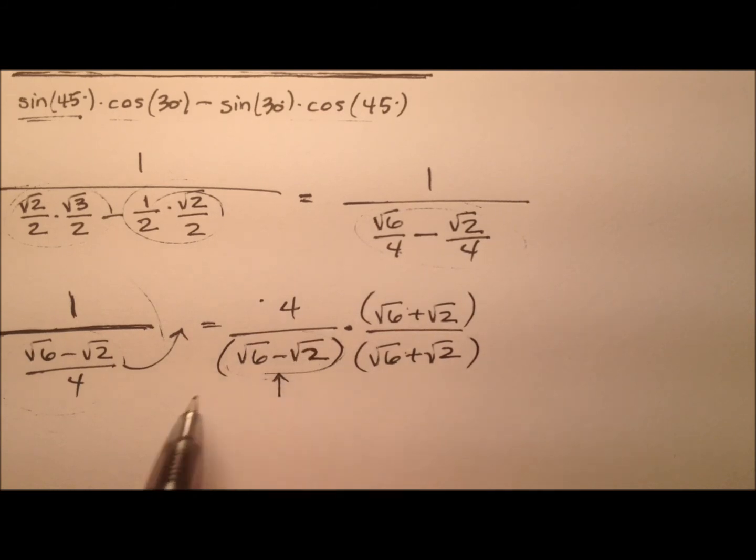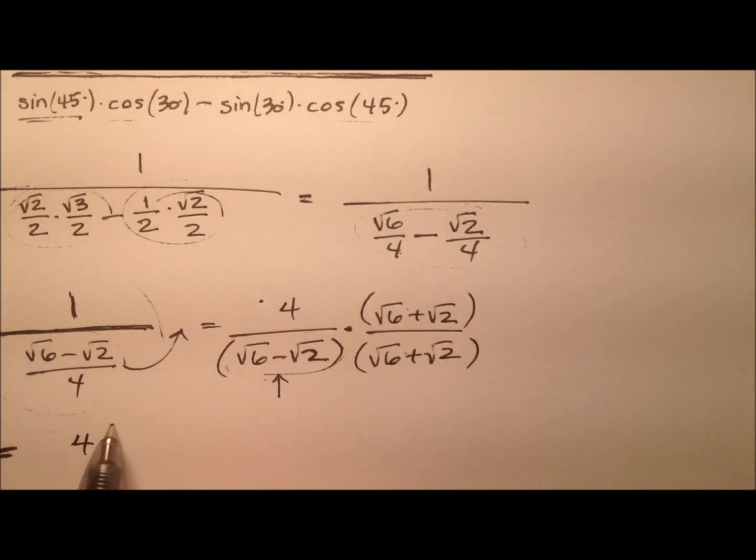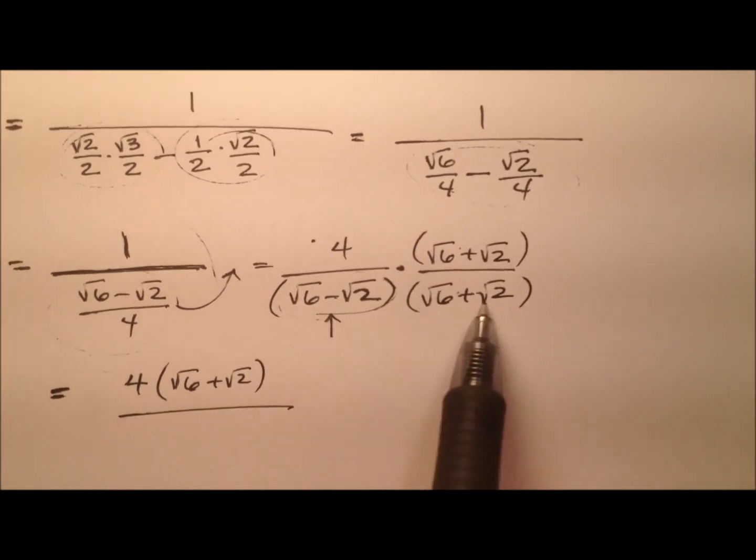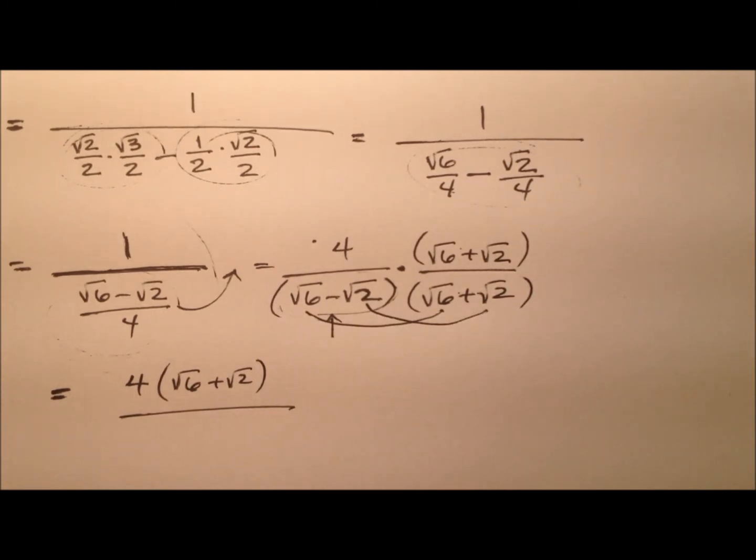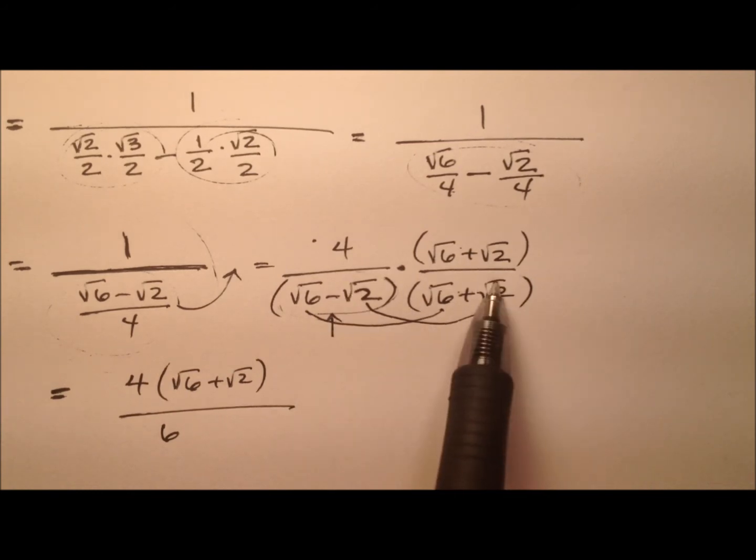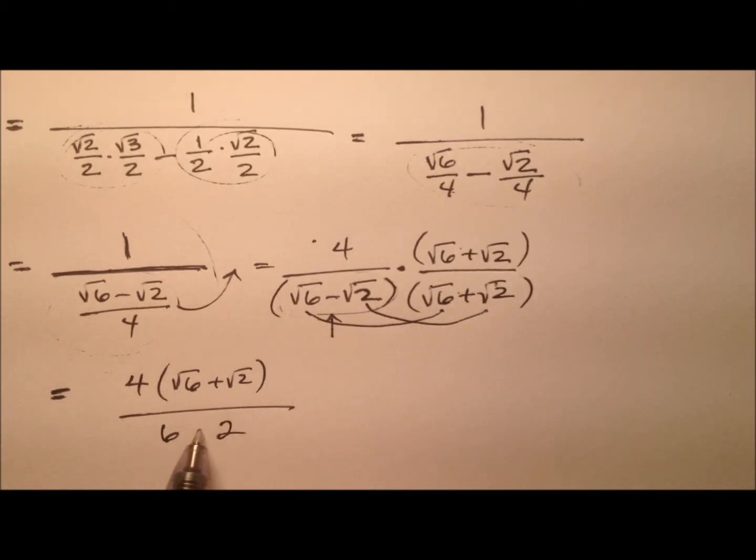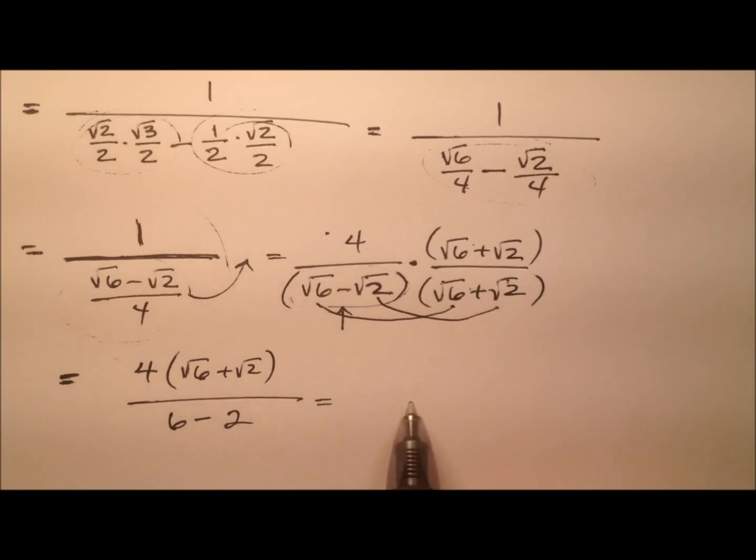Let's see what this looks like. We have 4 times (√6 + √2) over... For this difference of squares, I just need to multiply the firsts and the lasts and subtract, because those middle terms will cancel out. So √6 times √6 is 6, and √2 times √2 is 2, and we're subtracting.